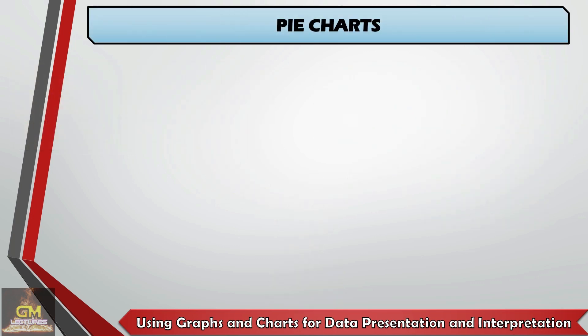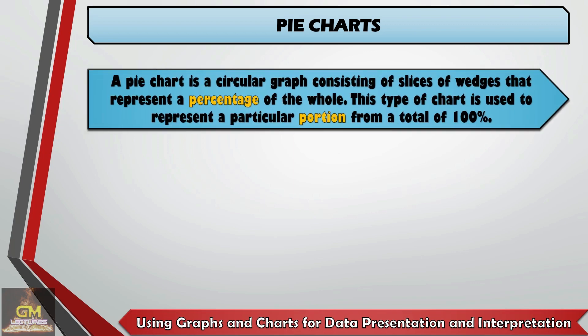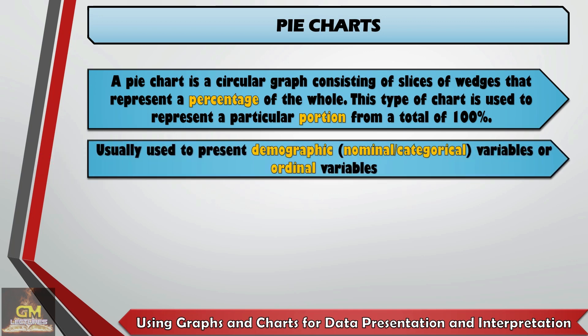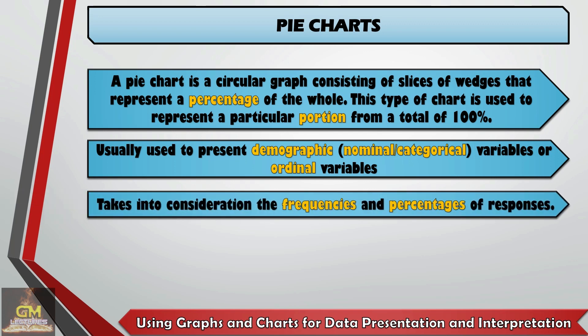Let's start with pie charts. A pie chart is a circular graph consisting of slices or wedges that represent a percentage of the whole. This type of chart is used to represent a particular portion from a total of 100%. Pie charts are usually used to present demographic, which would be nominal or categorical variables, or even ordinal variables. It is worth noting that pie charts take into consideration the frequencies and percentages of responses regarding a particular variable.